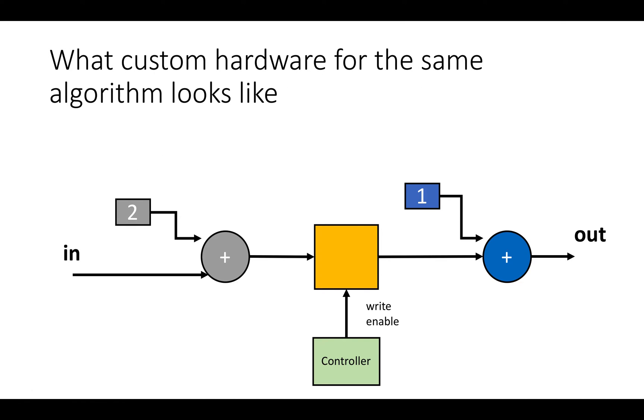So what does custom hardware for this algorithm look like? Well, it looks a lot different than the loop structure we just saw. We'll have a wire coming into an adder, which is going to be hardwired in its second input to the constant two. That's going to go into a register whose enable is controlled by a write enable set with a controller. And then that's going to go to an output which has an adder and a plus one.